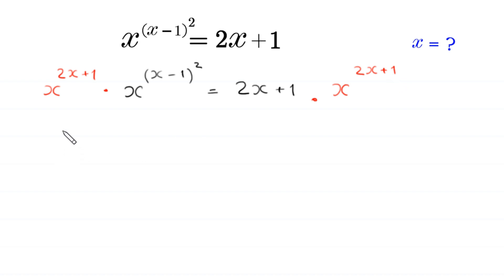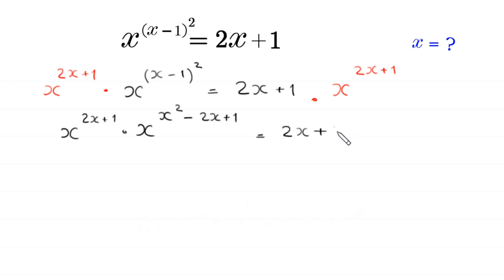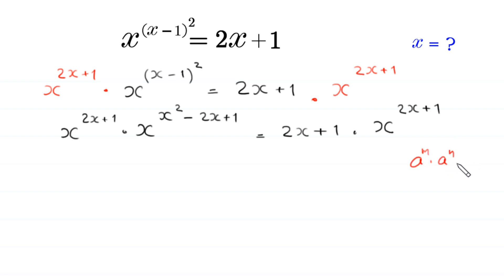x to the power 2x plus 1, times x to the power x minus 1 whole squared, is equal to x squared minus 2x plus 1, which equals 2 times x plus 1 times x to the power 2x plus 1. By using the power rule, a to the power m times a to the power n equals a to the power m plus n.